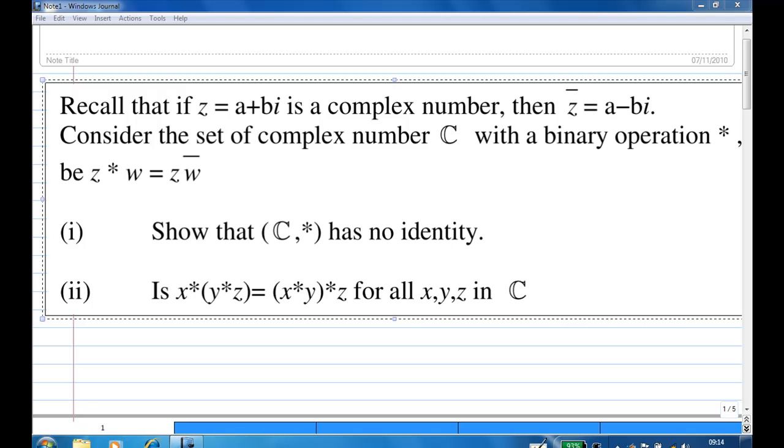Now for this recording, consider the set of complex number C, the binary operation star, where z star w equal to z w bar, where w bar means the conjugate of w.